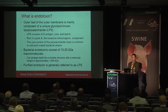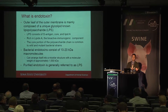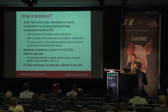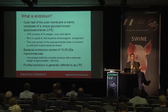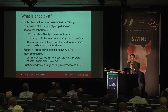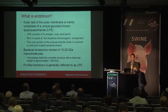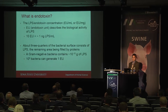Endotoxin has an outer leaf on the outer membrane mainly composed of a unique glycolipid known as lipopolysaccharide, or LPS — we use endotoxin and LPS synonymously. It consists of an O antigen, a core, and a lipid A region. The lipid A region is the immunogenic component — the part that binds to the pocket of toll-like receptor 4 to initiate the receptor-mediated immune response. Bacteria contain about 10 to 20 kilodalton molecules of endotoxin, ranging up to about 1,000 kilodaltons depending on the O antigen size.